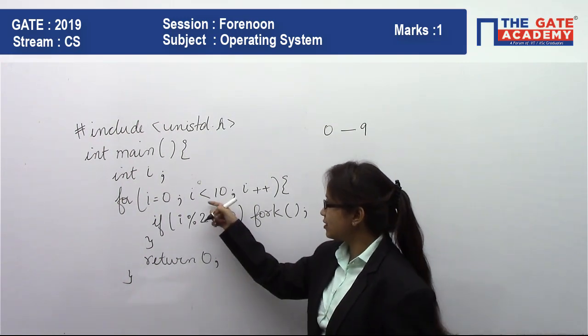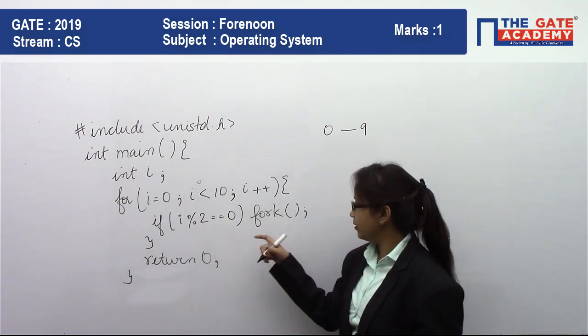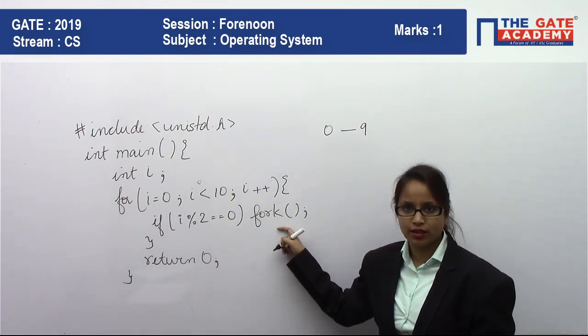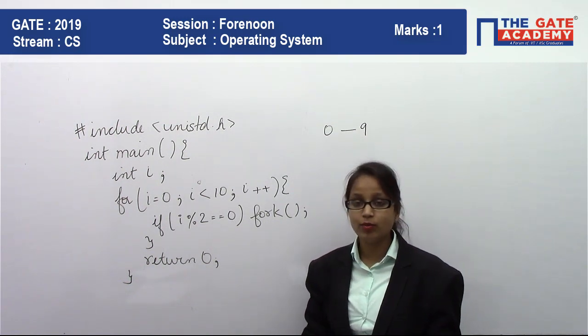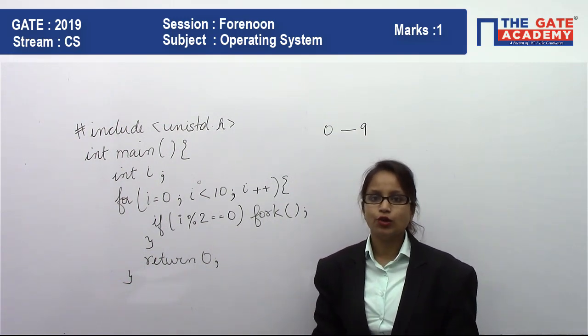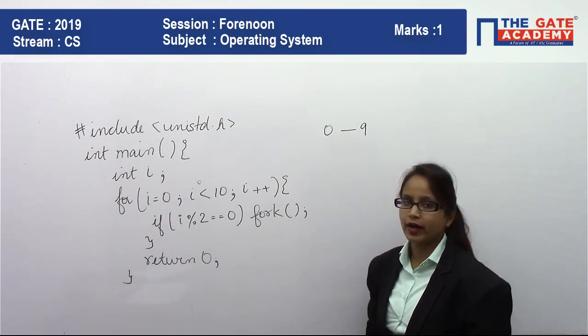And from this range, if this condition is satisfied, then only this fork will be executed. So the question was: what is the number of child processes created by the following code? We need to find how many child processes will be created.